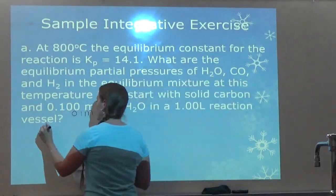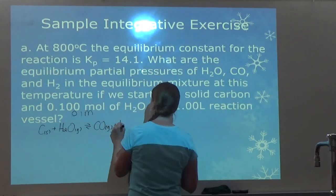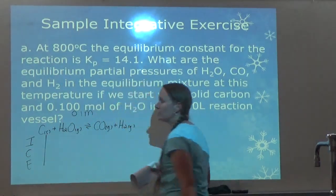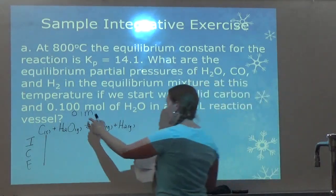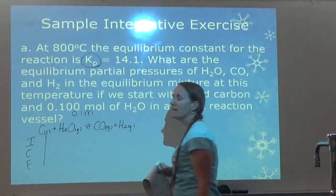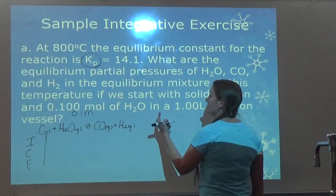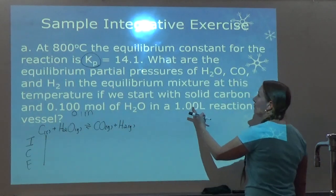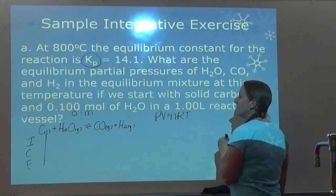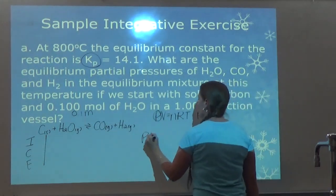I know moles, volume, and temperature, so I use P = NRT/V. My N is 0.1 moles, R is 0.0821 L·atm/(mol·K), and temperature is 800°C + 273 = 1073 K, divided by volume of 1 liter. Moles, Kelvin, and liters cancel, leaving ATM. I got 8.81 ATM for the initial partial pressure of water.